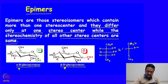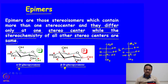Similarly, another molecule with three chiral centers where the chirality of one point differs between the two compounds — these two compounds are also called epimers.